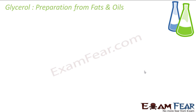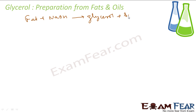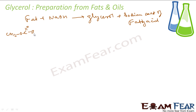Let's see the preparation of glycerol from fats and oils. The reaction is simple: you take fat — which is essentially a glyceride — and add NaOH in large quantity. Three moles of NaOH are required. You get glycerol and the sodium salts of fatty acids.